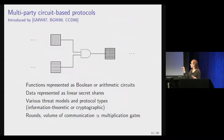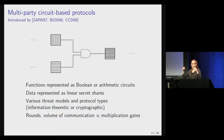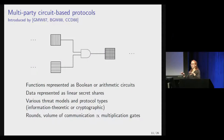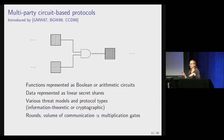The second style is multi-party circuit-based protocols, which encompasses a huge range of protocols. They all have two things in common: they represent the function as a circuit — either Boolean or arithmetic — and they represent data as linear secret shares. This means they're suitable for an arbitrary number of parties. The parties work through the circuit gate by gate, converting secret shares of the input to secret shares of the output. There's a variety of threat models and protocol types within this family. The number of rounds and volume of communication is proportional to the number of multiplication gates, because at multiplication gates you actually have to talk to the other parties.